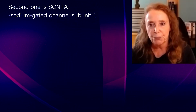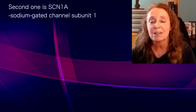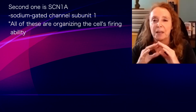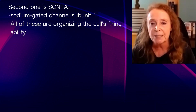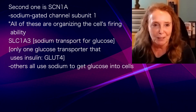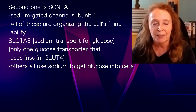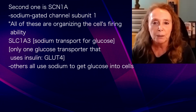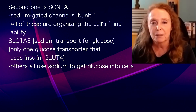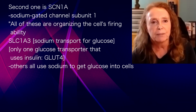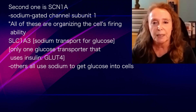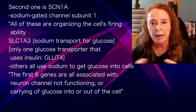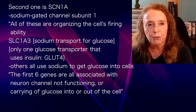The second gene is SCN1A, a sodium voltage-gated channel subunit — all of these organize the cell's firing ability. The next one, important for our nutrition discussion, is SLC1A3, which is a sodium transporter for glucose — a solute carrier. Unlike the insulin-dependent glucose transporter GLUT4, the other transporters GLUT1, 2, and 3 actually use sodium to get glucose into the cells. All of these are associated with either the neuron's channel not functioning or the carrying of glucose in or out of the cell.